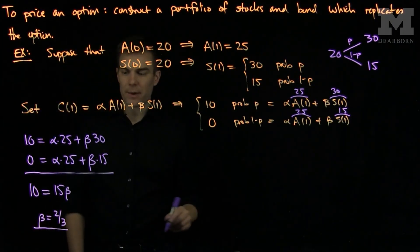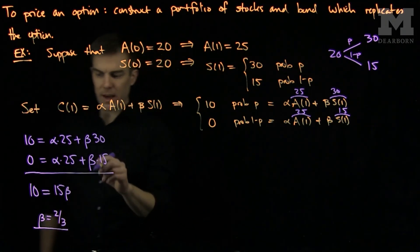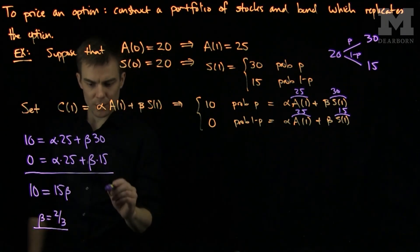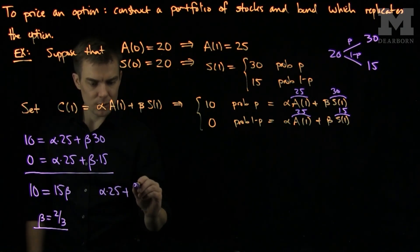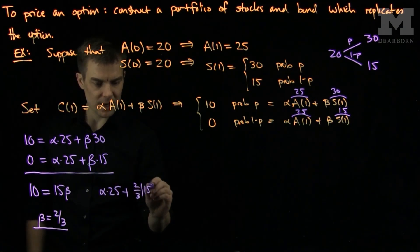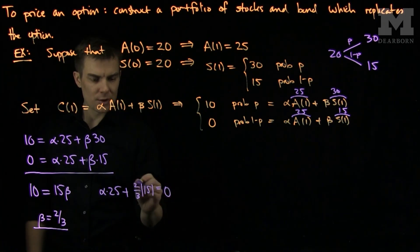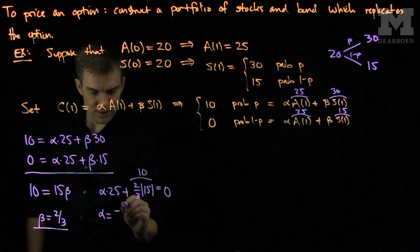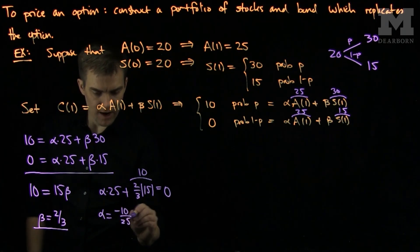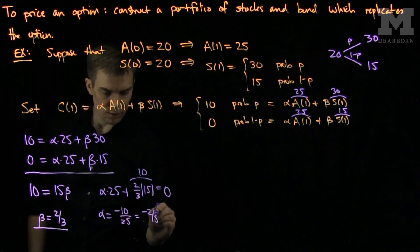Now we can plug it back into either one of the equations to find out what alpha is. If beta is 2/3, then this equation over here will tell me that alpha times 25 plus 2/3 of 15 is equal to 0. 2/3 of 15 is equal to 10. So that will tell me that alpha is negative 10 over 25 or negative 2/5.